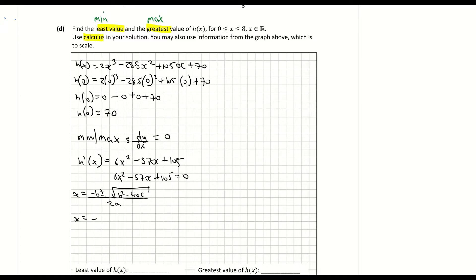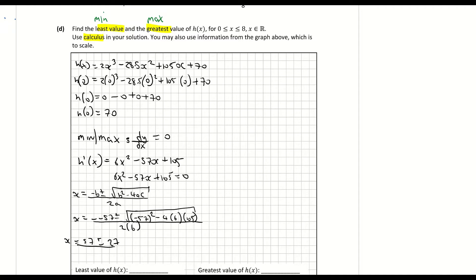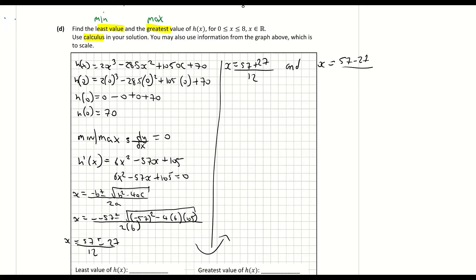Subbing in: x equals minus minus 57, plus or minus the square root of 57 squared minus 4 times 6 times 105, all over 2 times 6. That evaluates to x equals 57 plus or minus 27, all over 12. So the two values are x equals 57 plus 27 over 12, giving x equals 7, and x equals 57 minus 27 over 12, giving x equals 2.5.